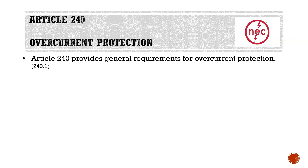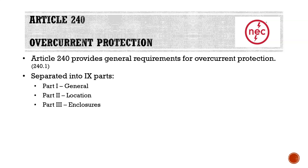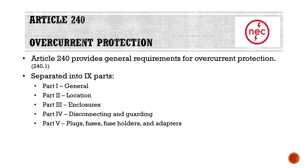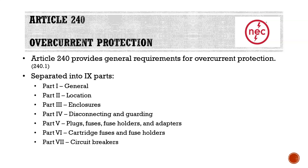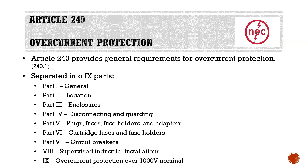Starting off at Article 240, overcurrent protection — Article 240 provides general requirements for overcurrent protection, found in chapters 1 through 4 of the NEC. It is separated into 9 parts: Part 1 General, Part 2 Locations, Part 3 Enclosures, Part 4 Disconnecting and Guarding, Part 5 Plugs, Fuses, Fuse Holders, and Adapters, Part 6 Cartridge Fuses and Fuse Holders, Part 7 Circuit Breakers, Part 8 Supervised Industrial Installations, and Part 9 Overcurrent Protection over 1,000 volts nominal.